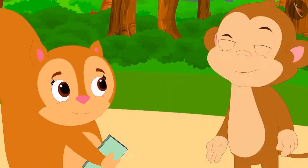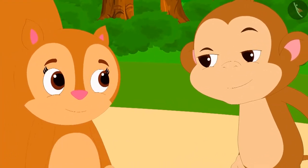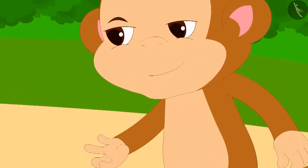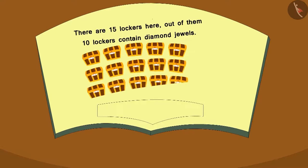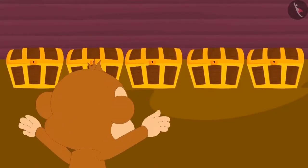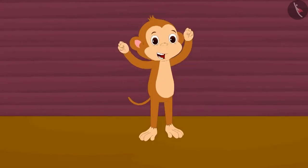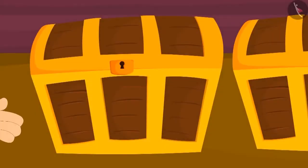The next day, Chanda tells Babban about her magic book. Out of greed, Babban borrows the book from Chanda for a day. Chanda gives it to him happily. Babban opened the book very excitedly and thought that he would himself make a picture in the book. Below that picture, Babban wrote this question: There are 15 lockers here. Out of those, 10 lockers contain diamond jewels. How many lockers are empty? The moment Babban wrote the question, five lockers appeared in front of him. Babban went mad in happiness. But as he opened the lockers, they all were empty.